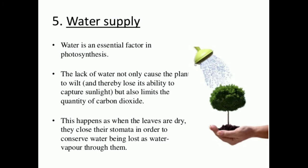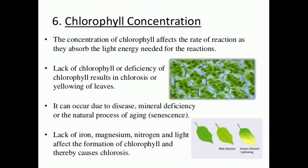The next important factor is water supply. Water is an essential factor in photosynthesis. A lack of water not only causes the plant to wilt and lose its ability to capture sunlight, but also limits the quantity of carbon dioxide intake. This happens because when leaves are dry, they close their stomata in order to conserve water being lost as water vapor. Not more than 1% of total water absorbed by the plant is used in photosynthesis, yet water is necessary for photosynthesis.